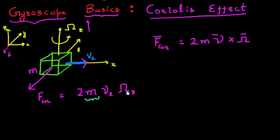An important thing to note is that the Coriolis force is proportional to the mass. So if I want to detect a small amount of angular rotation, it helps to have a sufficiently large mass. This has implications for which process technology is used to make MEMS gyroscopes. If we want a gyroscope very sensitive to small angular rotation, it is wiser to use a process that results in a larger proof mass.